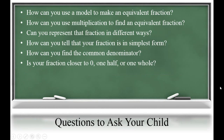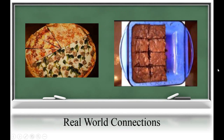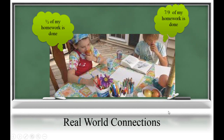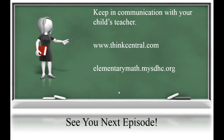Here are some questions you can ask your child while they're working through creating equivalent fractions. You can find lots of real-world connections to fractions in your kitchen — students can compare and order the amounts of each ingredient in a recipe. Another real-world connection is when talking about homework: Jimmy might have finished seven-ninths of his homework, Ashley might have finished half — who has finished more? Or: Jimmy finished eight out of twelve problems, Ashley finished seven out of nine — who has a greater fraction completed? Thanks for tuning in. Remember to keep in communication with your child's teacher and check out these links for more information. See you next time.